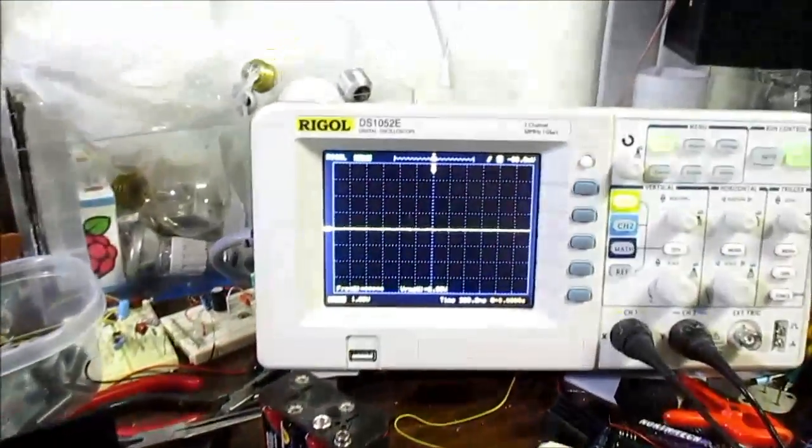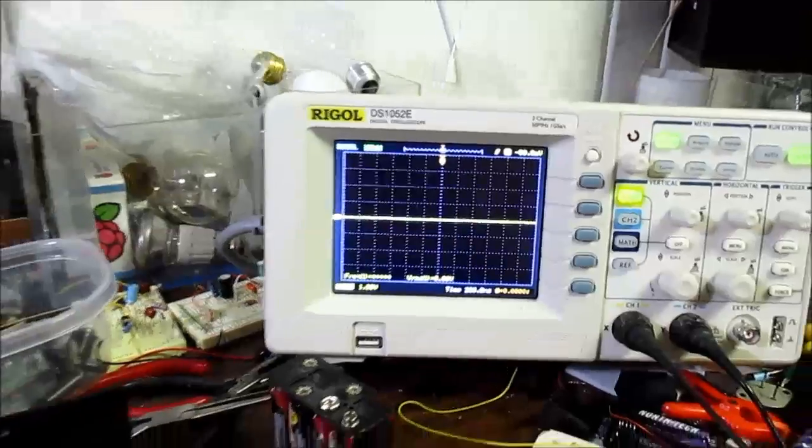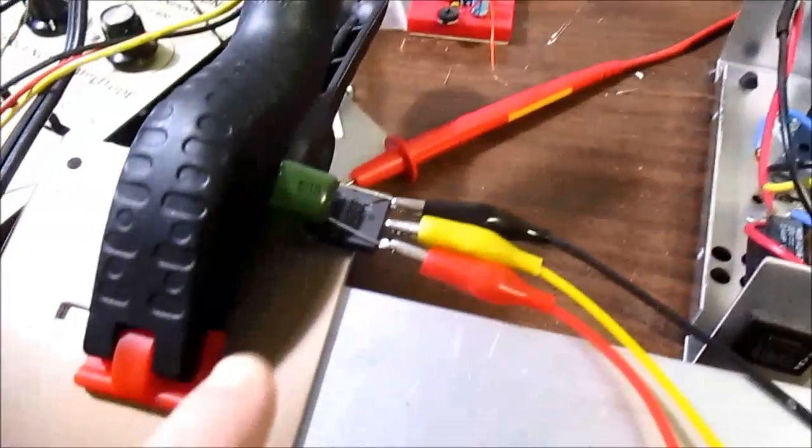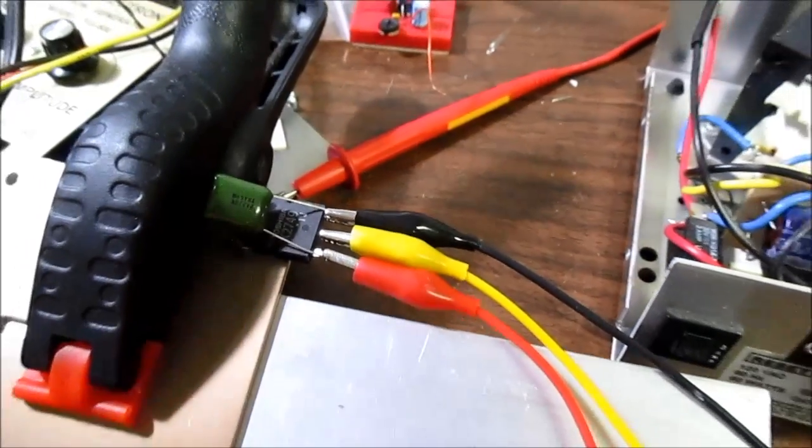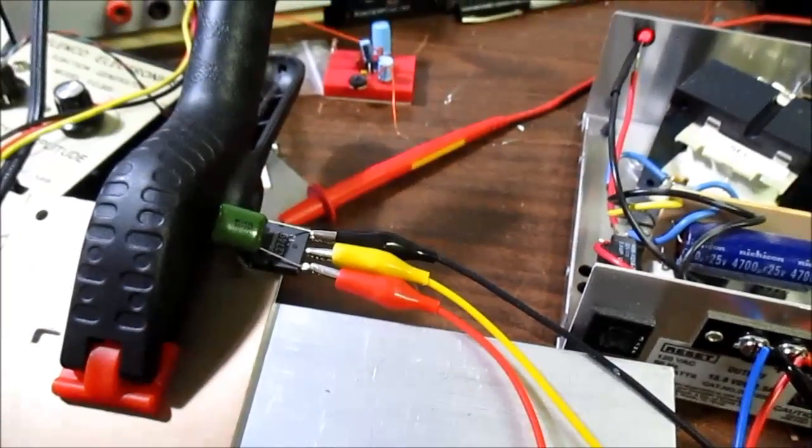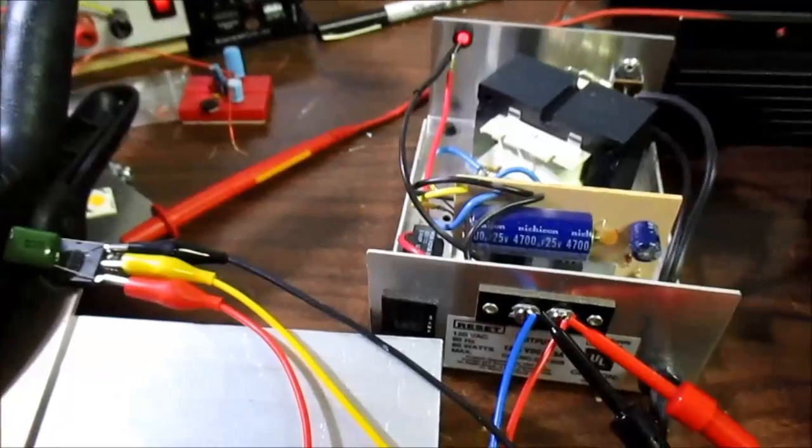Okay I hooked the scope up to the output of the power supply, see if we get ripple. I did have to put a capacitor across the MOSFET there because it was oscillating at 2 point something megahertz.